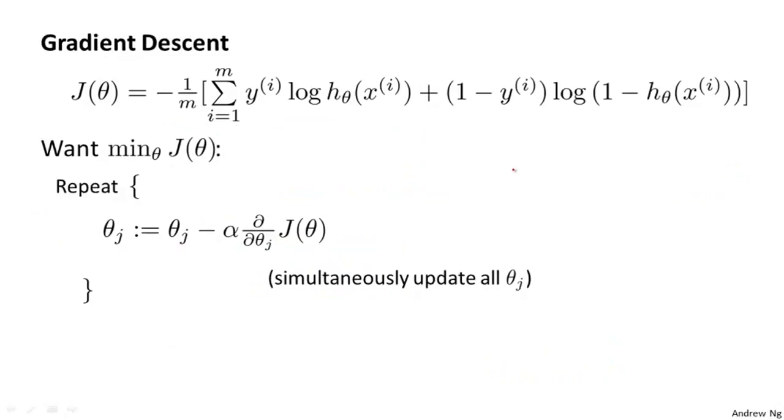The way we're going to minimize the cost function is using gradient descent. Here's our cost function. And if we want to minimize it as a function of theta, here's our usual template for gradient descent, where we repeatedly update each parameter by taking, updating it as itself minus the learning rate alpha times this derivative term.